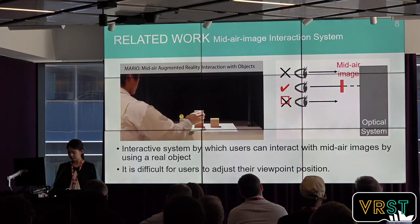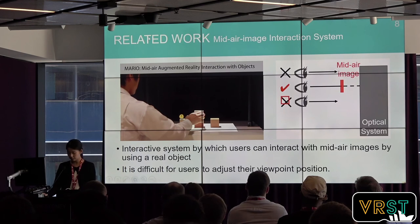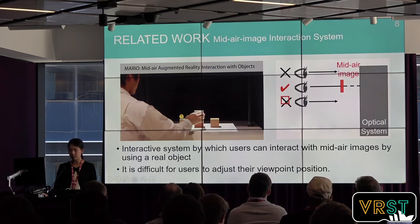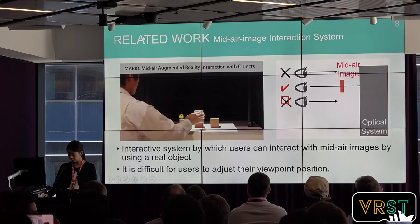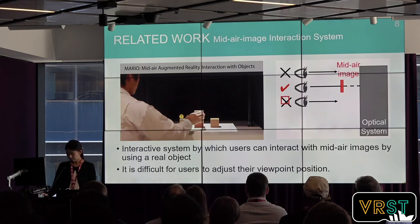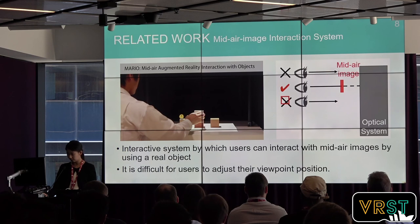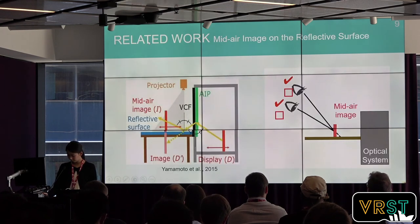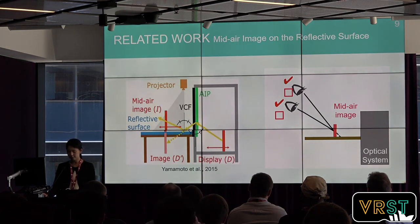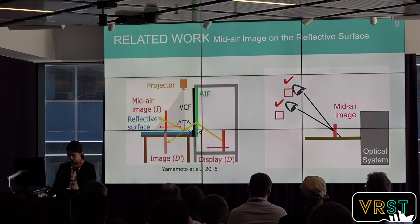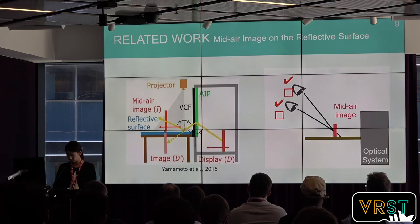There are designs for mid-air imaging interaction systems that use MMAPS, but they have limitations in terms of viewpoint position and installation space. Kim et al. proposed MARIO, an interactive system by which users can interact with mid-air images using a real object. Users can see the mid-air image by facing forward, but this way of viewing is difficult when adjusting viewpoint position. This problem was solved by a tabletop system which forms an upright mid-air image using the reflection of a reflective surface. The user looks at the mid-air image by looking down at the table surface, making it easy to adjust viewpoint position and see mid-air images without seeing the optical components.